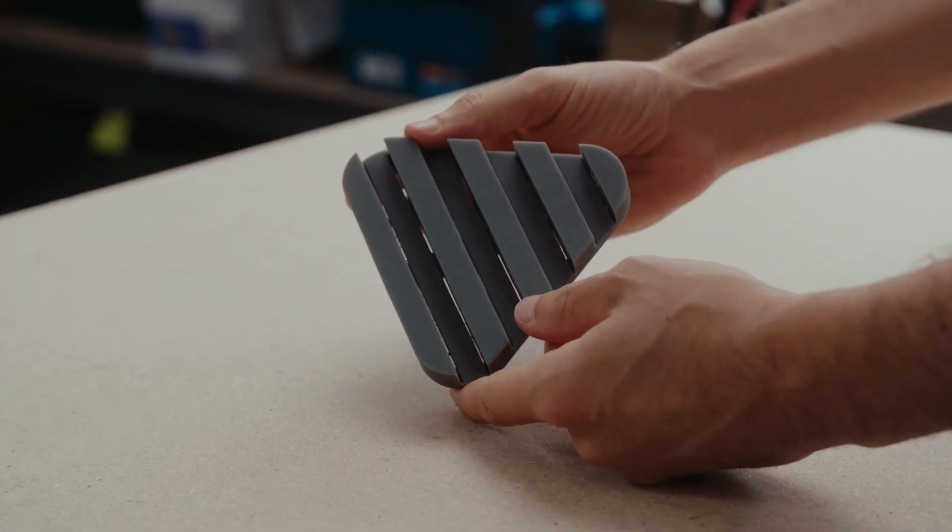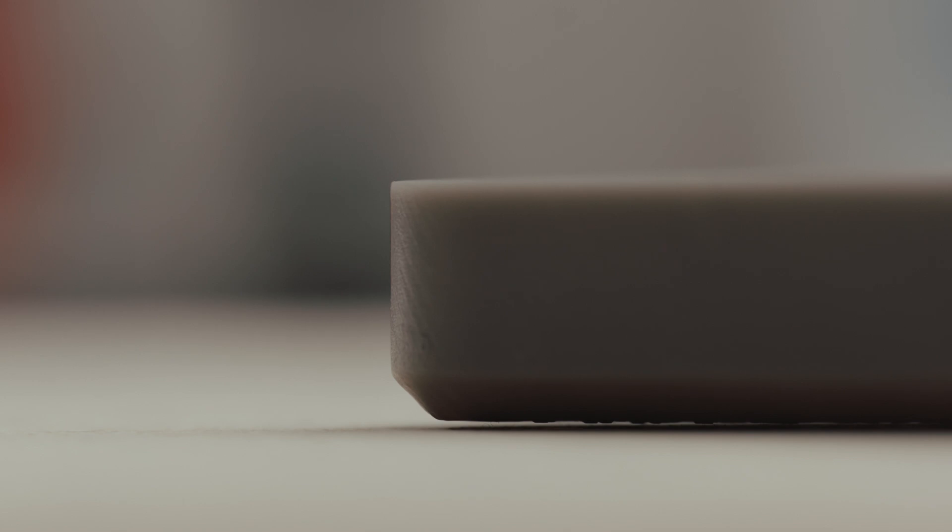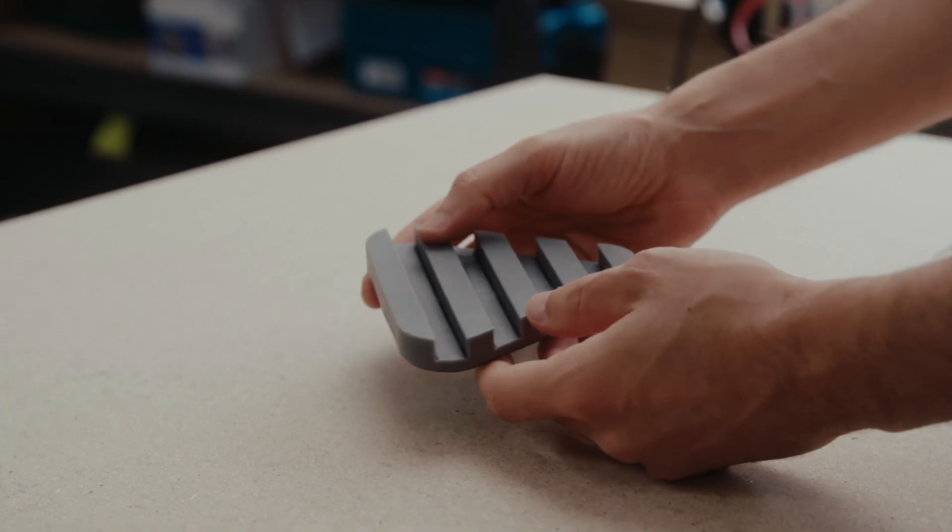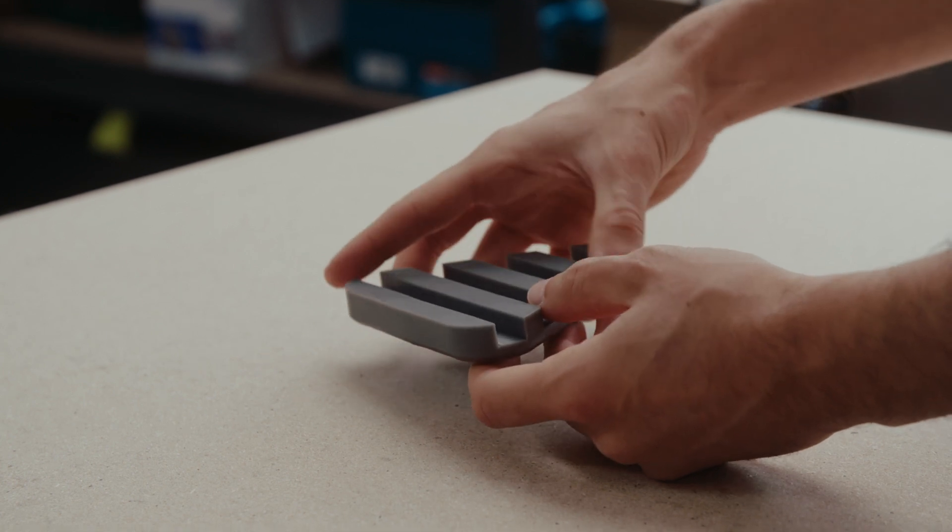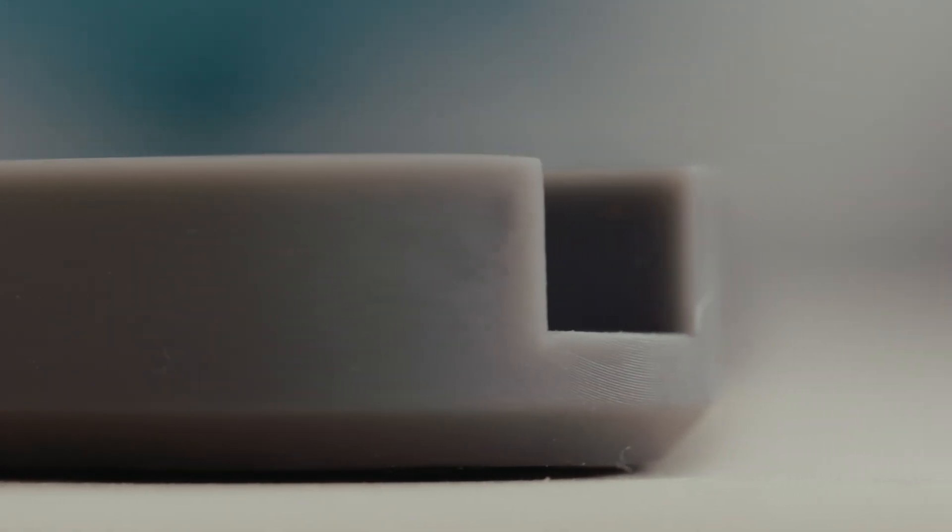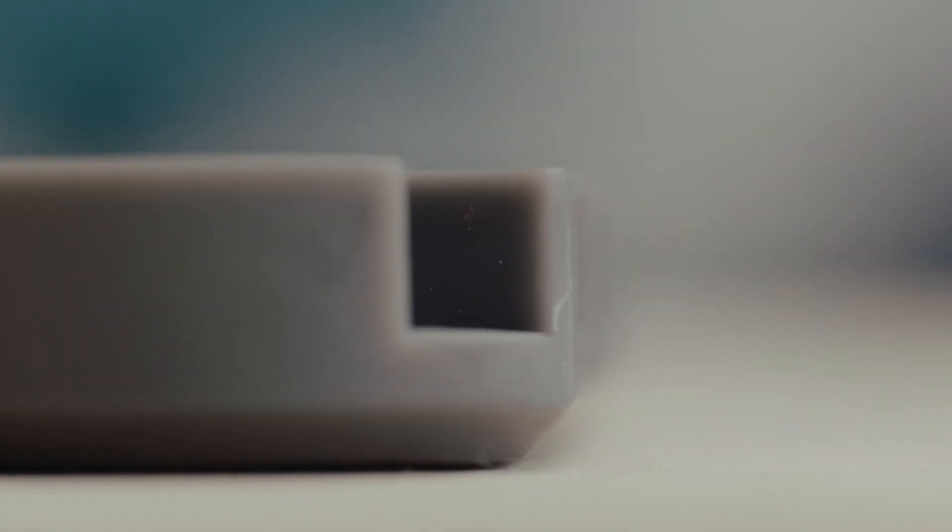Then we have undercuts. As a general rule, undercuts should be avoided as you won't be able to remove the object once the plastic sheet cools down. However, with our flexible EVA sheets, you can form parts with small undercuts as well as vertical walls.